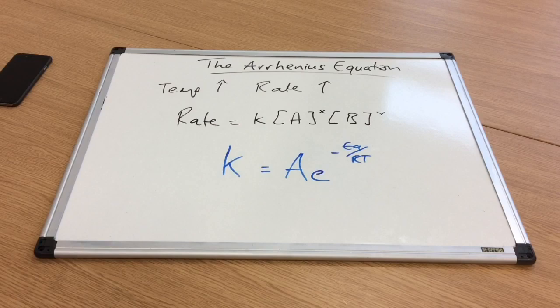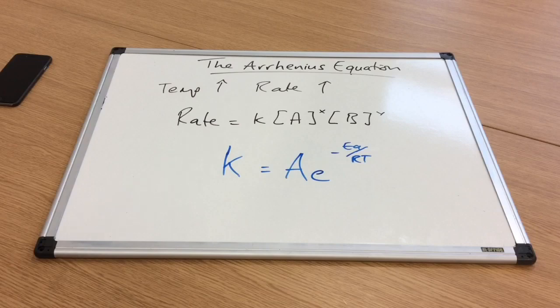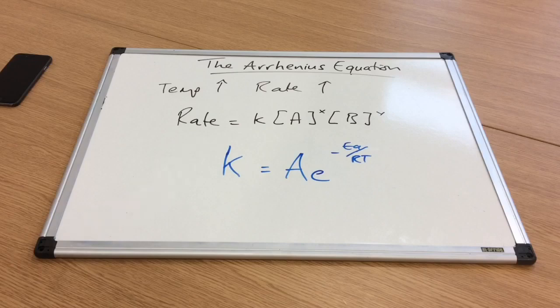The Arrhenius equation links the rate constant K with temperature. I've written the equation on the board, and don't panic—it's on the data sheet, so you don't have to memorize it. I'm just going to go through what the different terms mean.